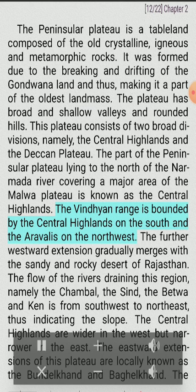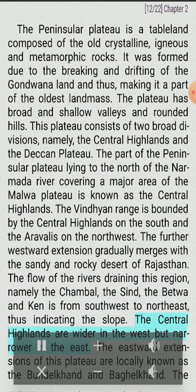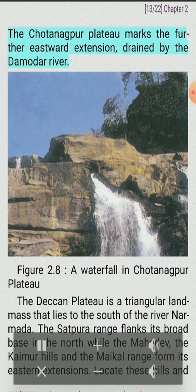The Vindhyan Range bounds the Central Highlands on the south and the Aravalis on the northwest. The further westward extension gradually merges with the sandy and rocky desert of Rajasthan. The rivers draining this region — the Chambal, the Sindh, the Betwa and the Ken — flow from southwest to northeast, indicating the slope. The Central Highlands are wider in the west but narrower in the east. The eastward extensions are locally known as the Bundelkhand and Baghelkhand. The Chotanagpur Plateau marks the further eastward extension, drained by the Damodar River.